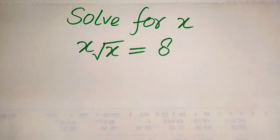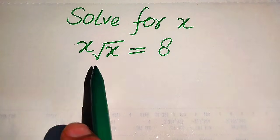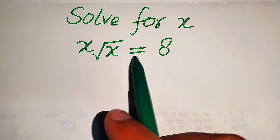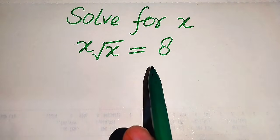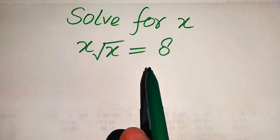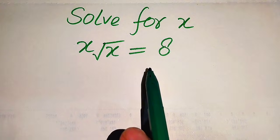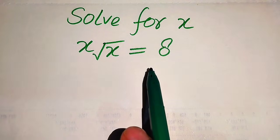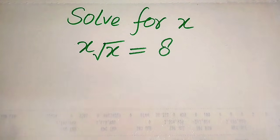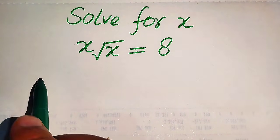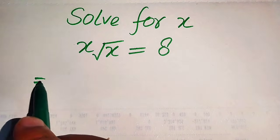Hello everyone. How to solve this problem for the values of x: if we have x times the square root of x equals 8, we solve this problem for all the values of x. So here we need to find all the roots of this equation.